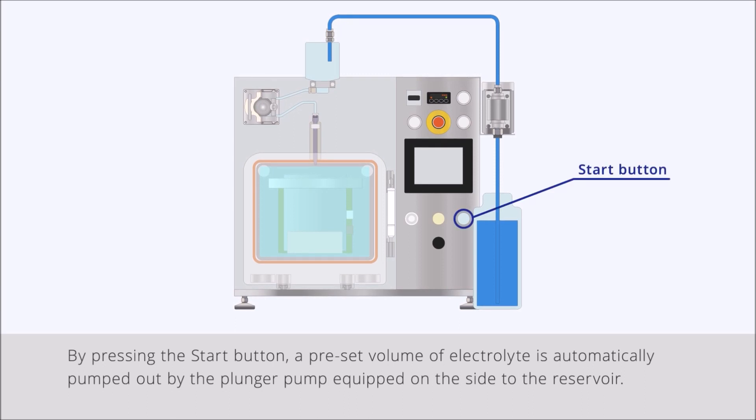By pressing the start button, a preset volume of electrolyte is automatically pumped out by the plunger pump equipped on the side to the reservoir.